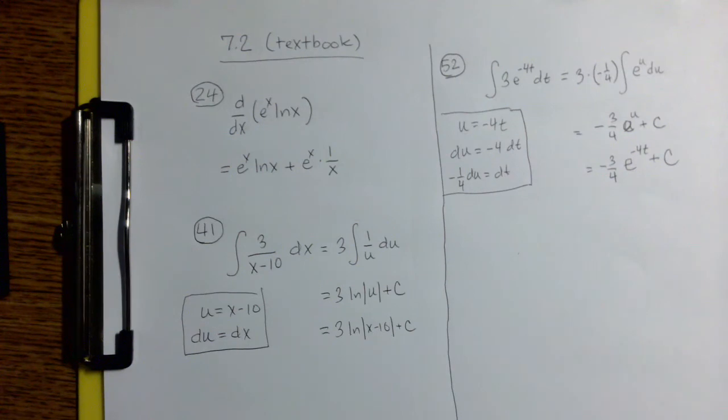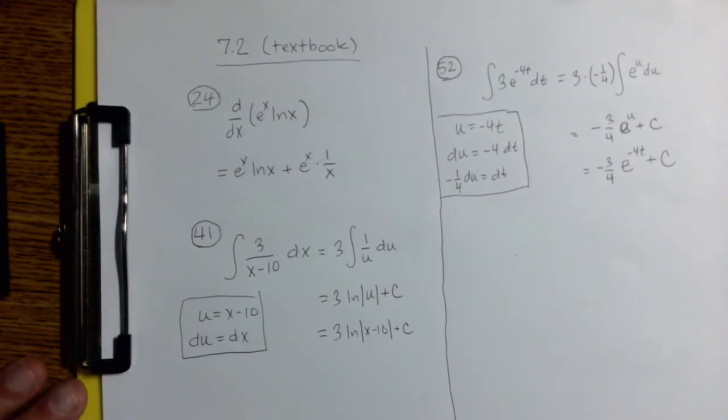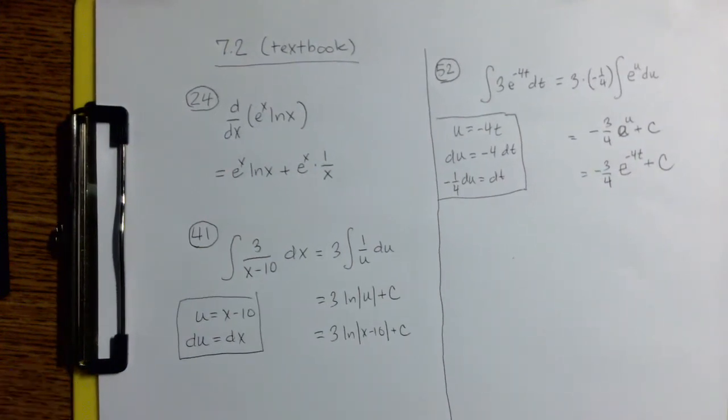52 over here is another indefinite integral. And this involves the other antiderivative rule or derivative rule, however you want to look at it, that was introduced in the section, the one for e to the x.